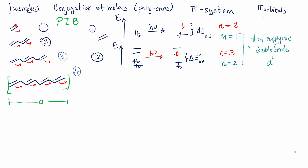For one double bond, n equals one; for two double bonds, n equals two. In general, the transition originates at n equal to the number of double bonds d, and the electron lands at n equals d plus one.